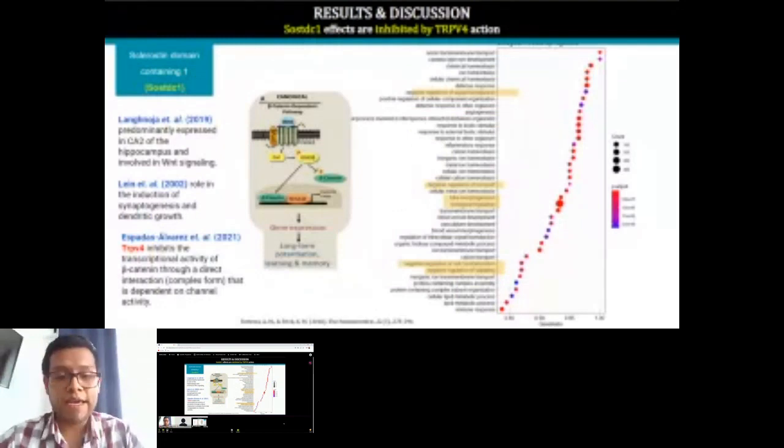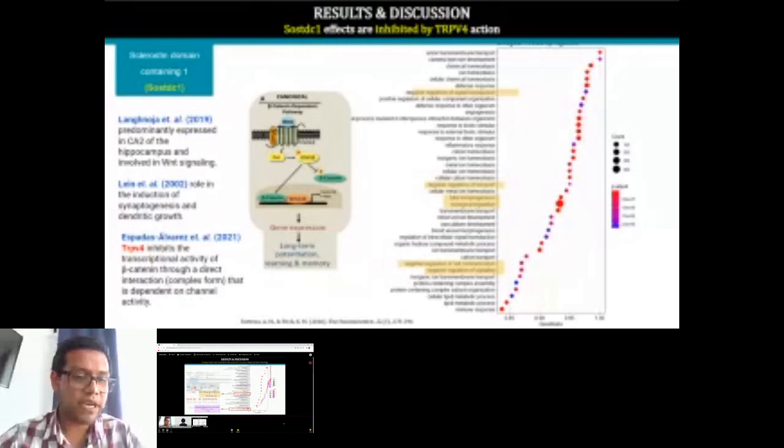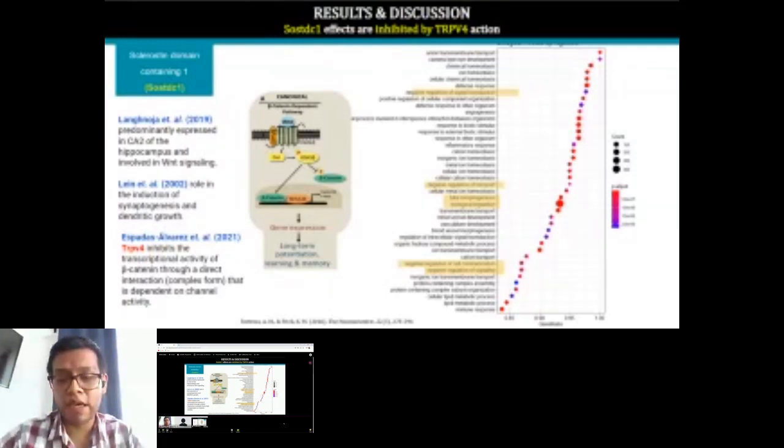We also found the increased expression of sclerostin domain-containing one. This role is implicated with synaptogenesis and dendritic growth. However, it has been reported in the literature that this function or the plasticity function that could have this expression of this gene could decrease by the TRPV4.